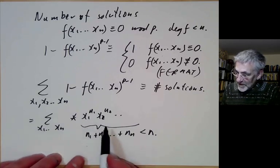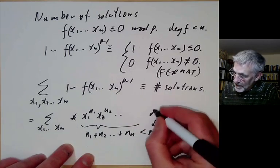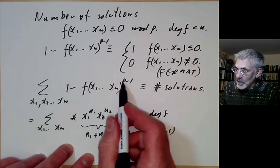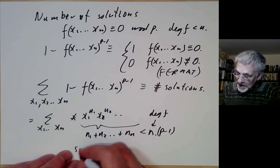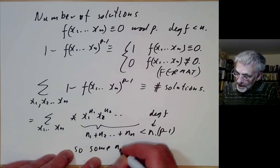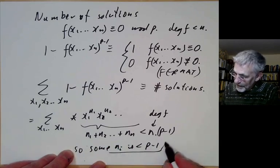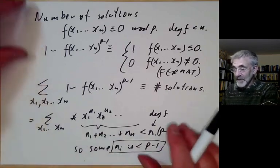We notice that the degree is less than this number n. So the degree is going to be less than the degree of f, which is n, times p-1, because we raised f to the power of p-1. So sum ni is less than n(p-1) in each of these monomials.